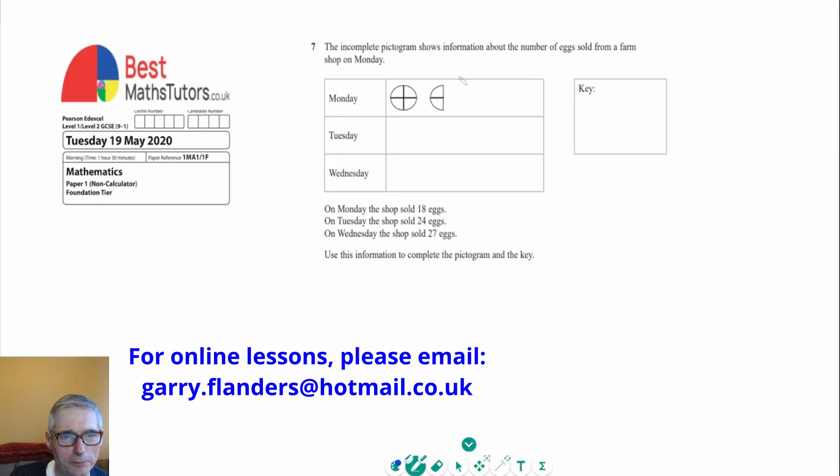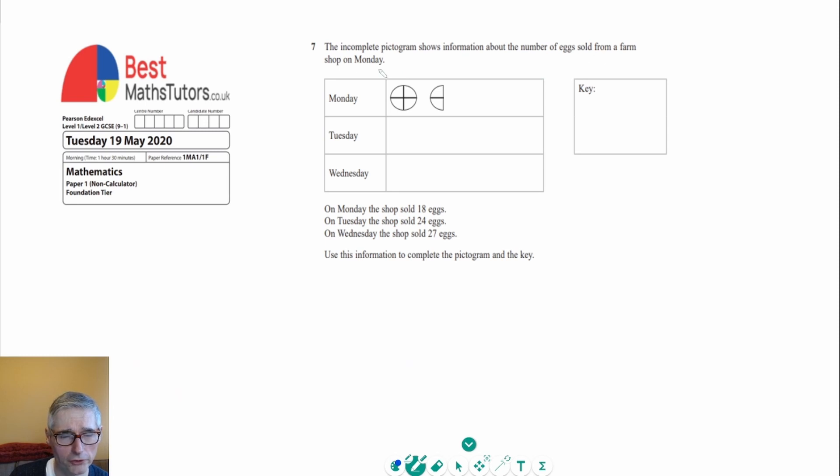This is question seven, a question about pictograms, which is a way of representing data. This incomplete pictogram shows information about the number of eggs sold from a farm shop on Monday. It says that on Monday the shop sold 18 eggs, Tuesday 24, Wednesday 27, and we've got to complete the pictogram and the key.